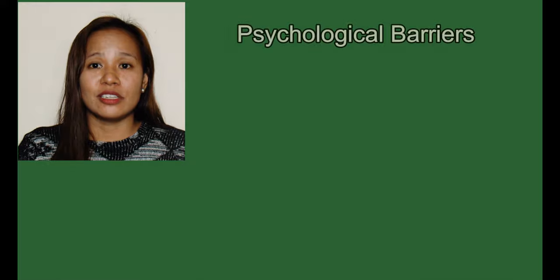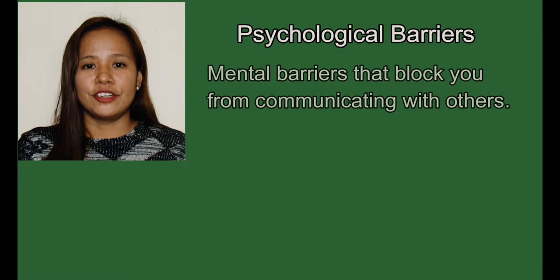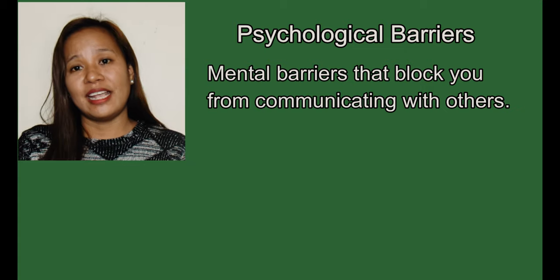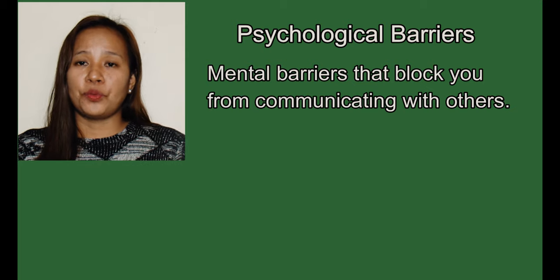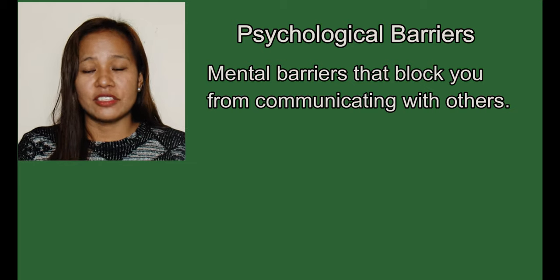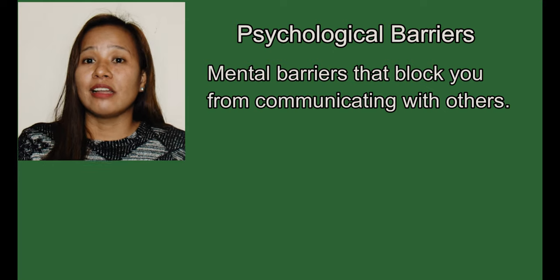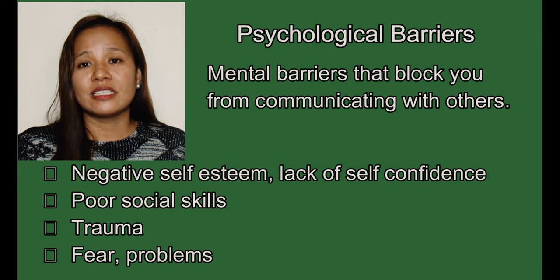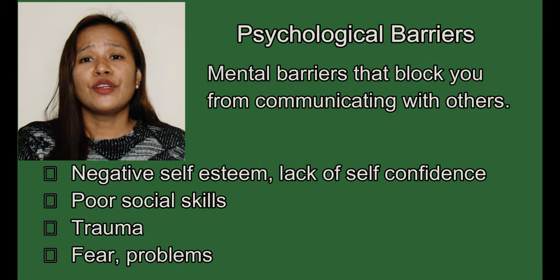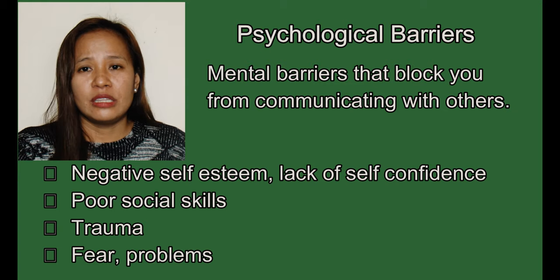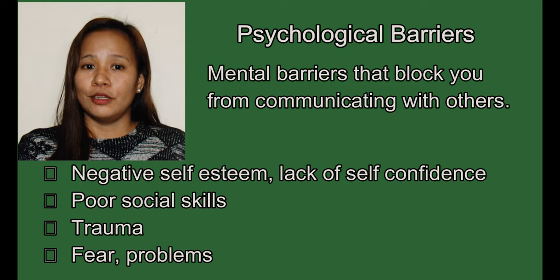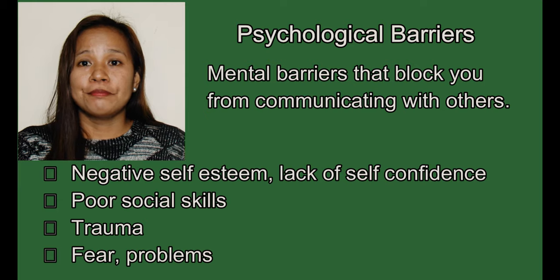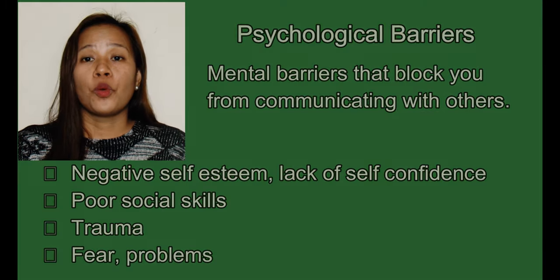The second barrier is psychological barriers. These are mental barriers — social or personal issues that block you from communicating with others, very much connected with the negative self-image we project to the people around us. Examples include negative self-esteem, lack of confidence, poor social skills, negative thoughts about how people view you, trauma, depression, and fear. All these psychological barriers hinder you from understanding or communicating with other people.